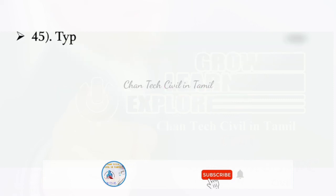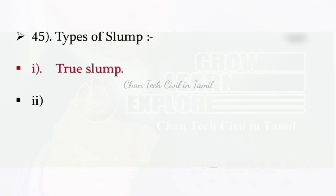Types of slump: first is true slump, next is shear slump, third is collapse slump. These are 3 types of slump.